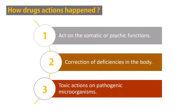Now, what about the drug's action — how does it happen? Drug actions happen in three ways. The first is acting on somatic and psychic functions. The second is correction of deficiency — for example, if you have an iron deficiency, the drug should correct it. The third is toxic action on pathogenic microorganisms. These are the three actions that a drug can do in your body.